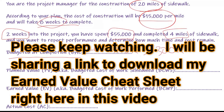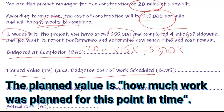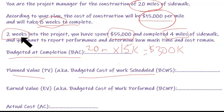The next thing we need to solve is the planned value. The planned value is also known as the budgeted cost of work scheduled (BCWS). This is what you have scheduled — what you think you should have completed by now. We are two weeks into this project, so two weeks out of eight weeks means you should have done a quarter of the work.